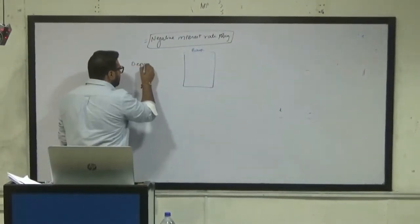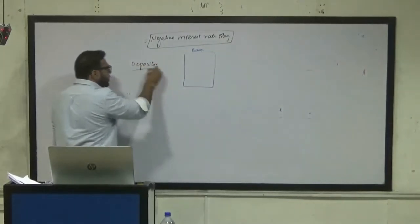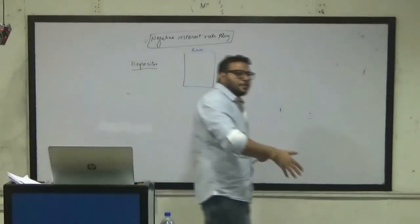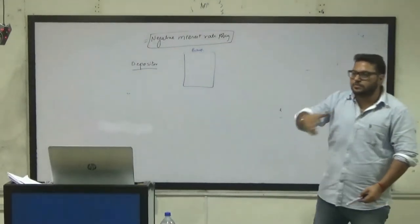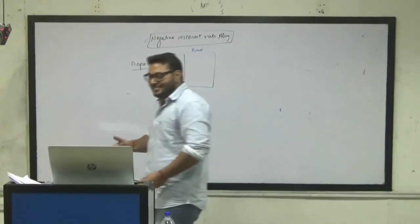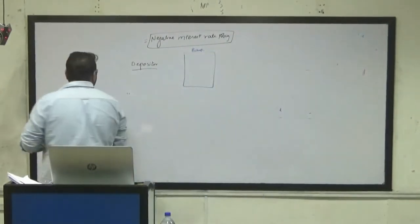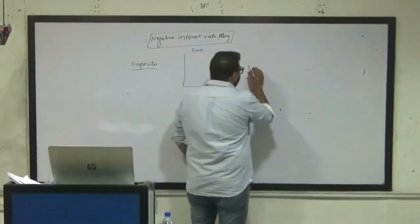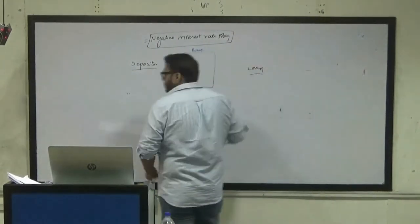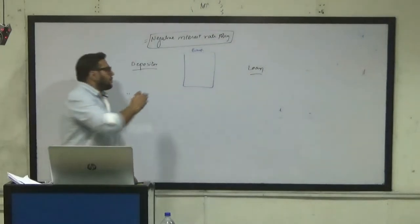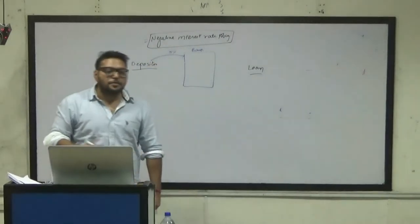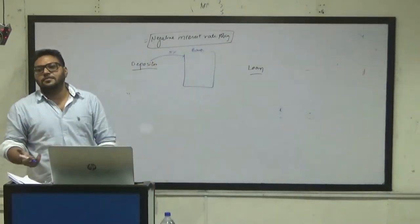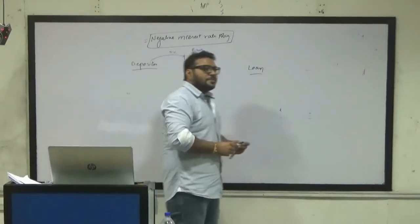Here is the depositor. How does the bank work? A lot of people deposit money in the bank, then the bank invests and gives loans to people. Here is the loan. Suppose the depositor is getting 5% interest. He has deposited money.